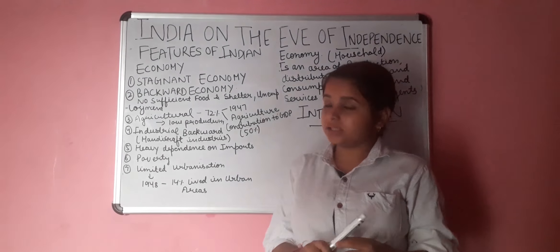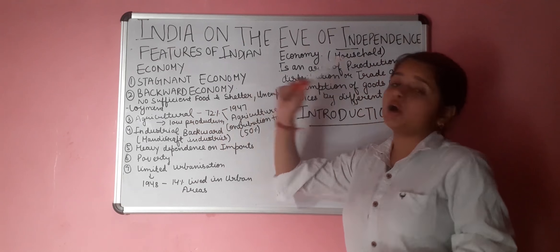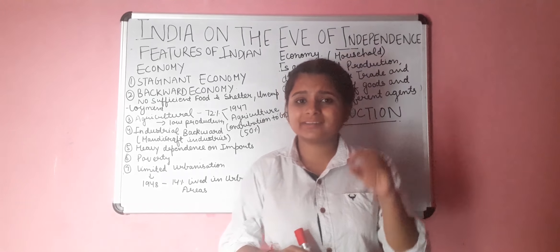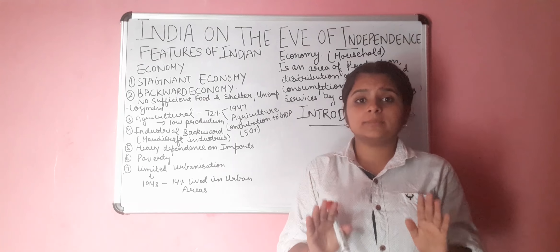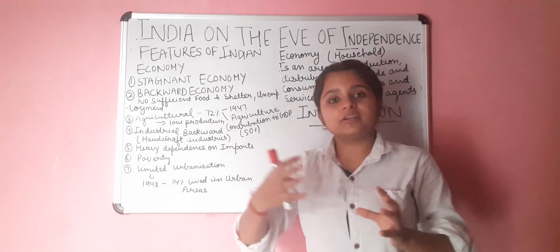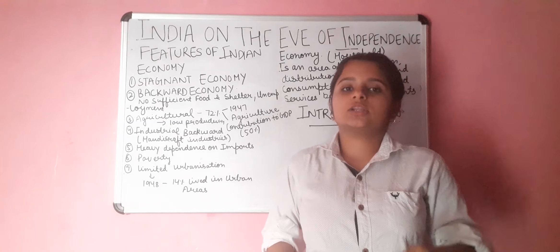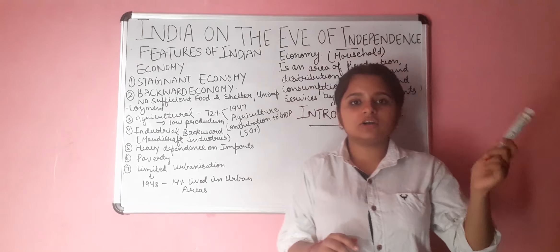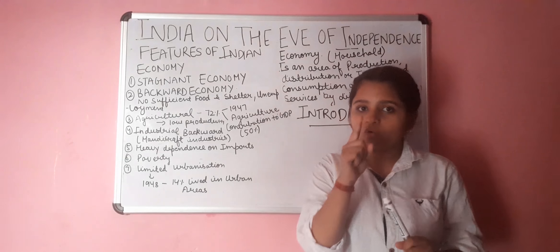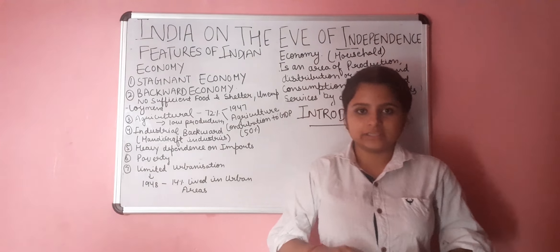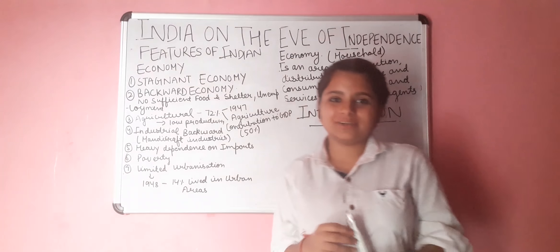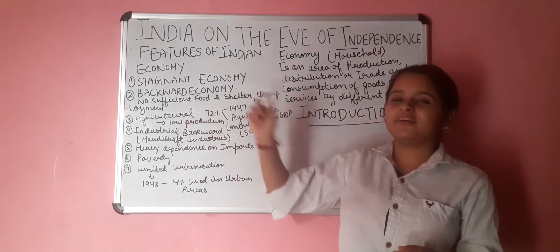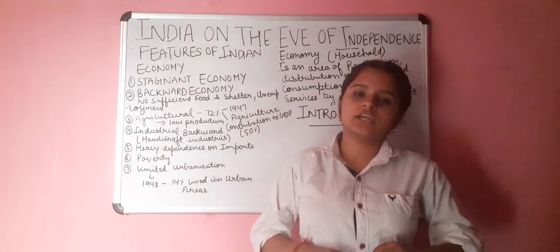Feature number 1 is stagnant economy. In simple words, stagnant economy means the economy has stopped or is growing very slowly. We can call that a stagnant economy. For example, during the recent lockdown two months ago, our economy was stagnant because everything was slowly grinding to a halt. That is the best example you can use for this feature. At that time, our economy was very poor.